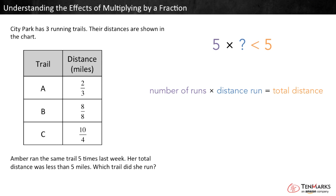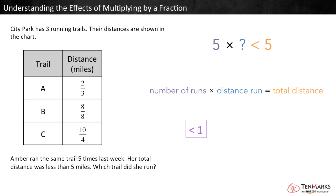To get a number less than 5, should we multiply 5 by a fraction less than 1, equal to 1, or greater than 1? Less than 1. Multiplying by a fraction less than 1 produces a number less than your starting number. So Amber must have run Trail A — it is the only trail less than 1 mile long.